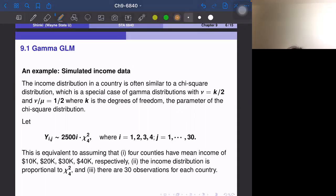Hi, this is section 9.1, an example. We use simulated income data because the textbook uses some data, but it does not make much sense to use the Gamma GLM.